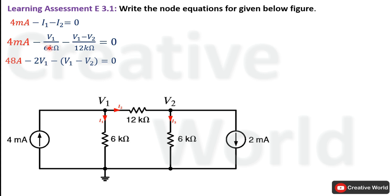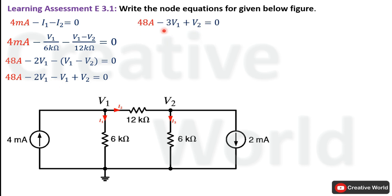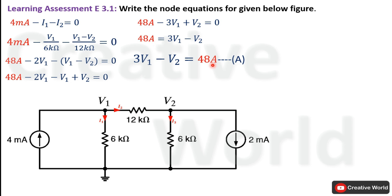12 kΩ divided by 6 kΩ gives 2, which multiplies with V1. The 12 kΩ cancels with the 12 kΩ in the denominator of the second term, leaving (V1 − V2). Opening the brackets: −V1 and +V2. Combining −V1 and −2V1 gives −3V1. Rearranging the equation gives 3V1 − V2 = 48. This is labeled as Equation A.